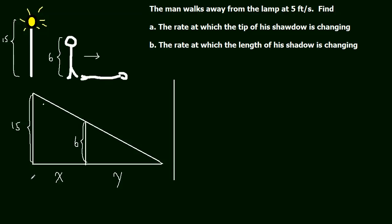The length, let's call this whole side L. So the length is just the distance the man is away from the lamp, plus the length of his shadow. Now we also have proportional triangles going on, and that's the first place we want to start, or sorry, similar triangles which will create a proportion.